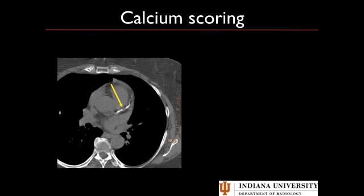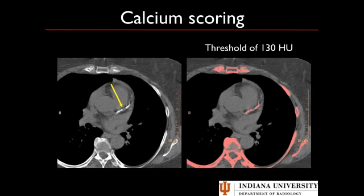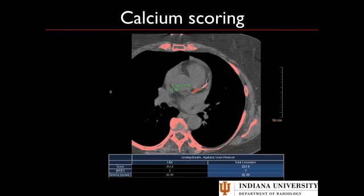Here you can see an axial image with calcification in the LAD. We turn on the highlighting and it will highlight anything with a Hounsfield unit greater than 130. The computer highlights the calcium within the vessel, then we click on it and it calculates the area. Anything contiguous — superior and inferior, cranial or caudal — it will also highlight. If there's too much disruption between areas, it won't bridge that gap, so you'd click separately to score it. As you score each one, it adds up. Here we've shown this is in the LAD; here's the score based on the area — that's an Agatston score.